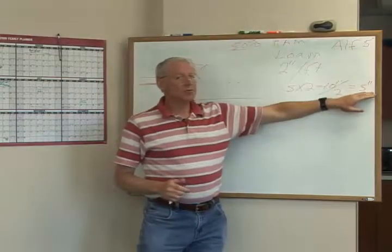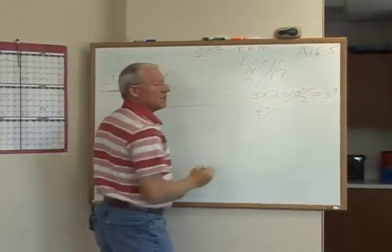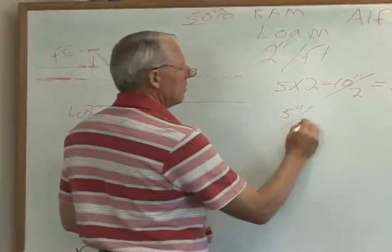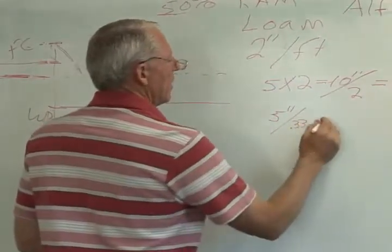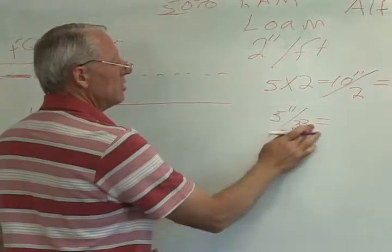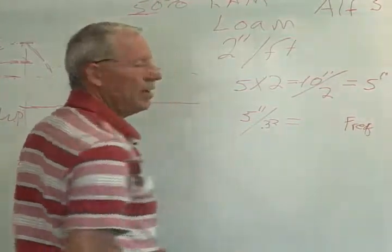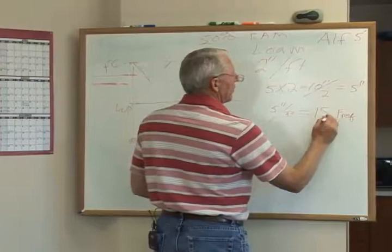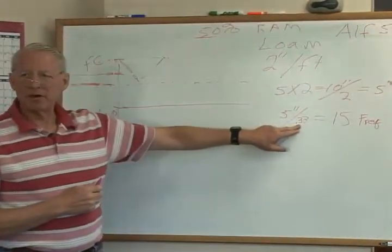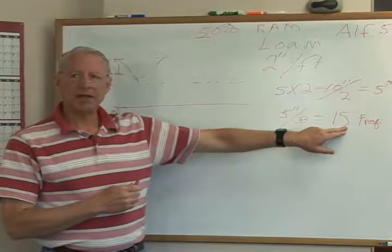Now, if our irrigation system could put on five inches and my evapotranspiration was a third of an inch a day, then I would take my five inches, divide it by this third of an inch, and this would give me what we would call our frequency. This would tell me how soon I would need to irrigate again. So if our irrigation system could put on five inches and we were in the hot part of the summer when we were using a third of an inch a day, we would need to irrigate every 15 days.